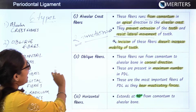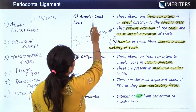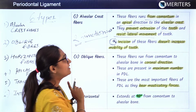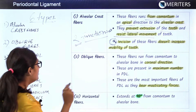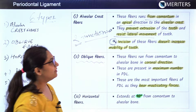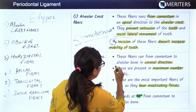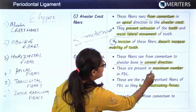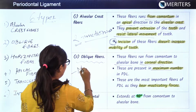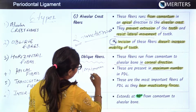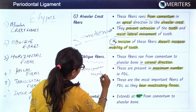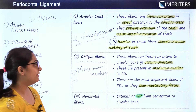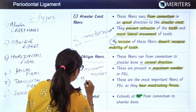A very important keynote about alveolar crest fibers is that if you cut or incise these fibers, they do not increase the mobility of the tooth. The second fiber is the oblique fibers, which run from alveolar bone in a coronal direction. These are present in the maximum number and are the most important periodontal ligament fibers because they bear maximum masticatory forces.